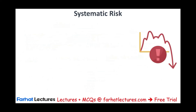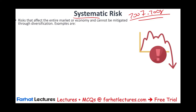Systematic risk is when the whole system is going down. The best example is the financial crisis of 2007–2008, the housing crisis, where homes across the U.S. and the world went down in value and all stock markets across the globe declined. These are risks that affect the entire market or economy and cannot be mitigated through diversification. It didn't matter whether you were invested in technology, real estate, electronics, or retailers — everything was affected.